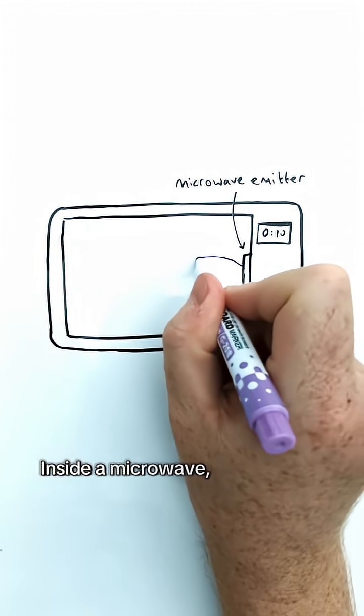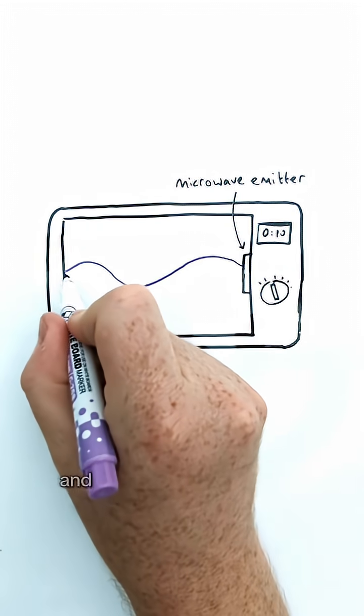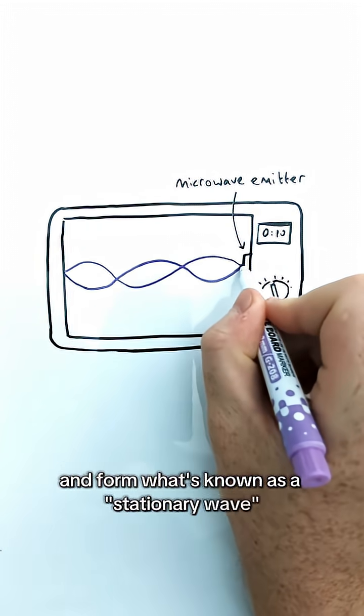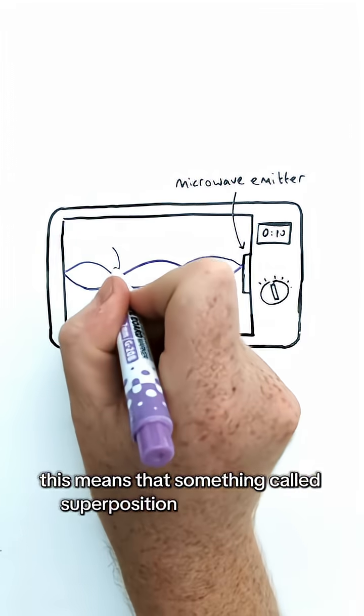Inside a microwave, microwaves themselves reflect off the inner walls and form what's known as a stationary wave. This means that something called superposition is taking place.